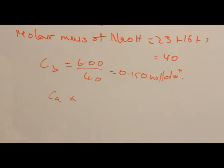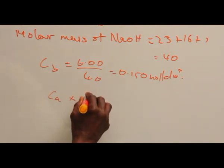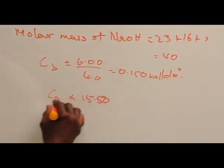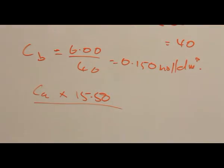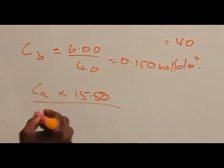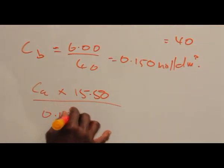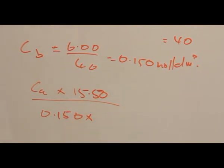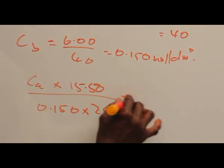Then, the volume of the acid is given as 15.5 cm³, and the concentration of the base we have just calculated to be 0.150. And the volume of the base is given to be 25 cm³.